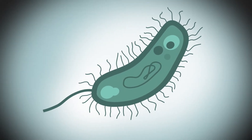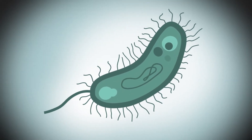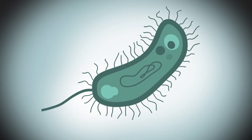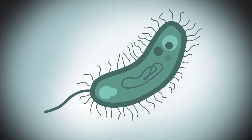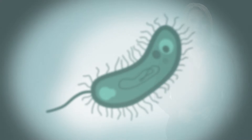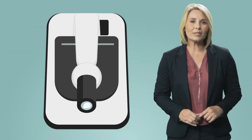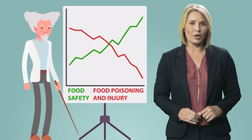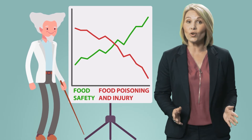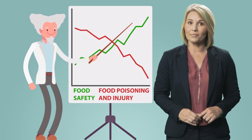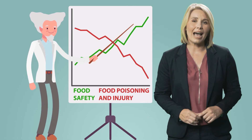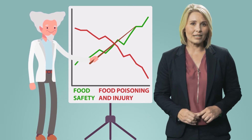We'll examine and analyze the key hazards including microbiological, chemical including allergens, and physical, and show how to determine critical control points and avoid cross-contamination in the food chain. You'll also learn how to take corrective action if limits are breached.